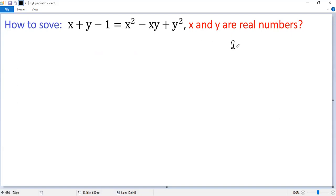If a squared plus b squared equals zero and a, b are real numbers, then we know a equals zero, b equals zero, right?